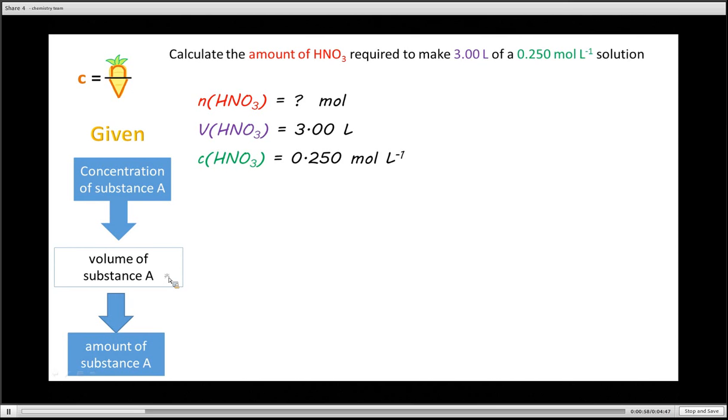Now we use the C is equal to N over V equation and notice that N is on the right hand side associated with V whereas we are trying to calculate N. So we need to get N by itself. So the way to do that is to say, right, I must get rid of the V's on the right hand side. So I multiply this by V and you can see the V's have cancelled out. But whatever I do to one side of the equation, I have to do to the other side. So you can see I now have N is equal to C times V.